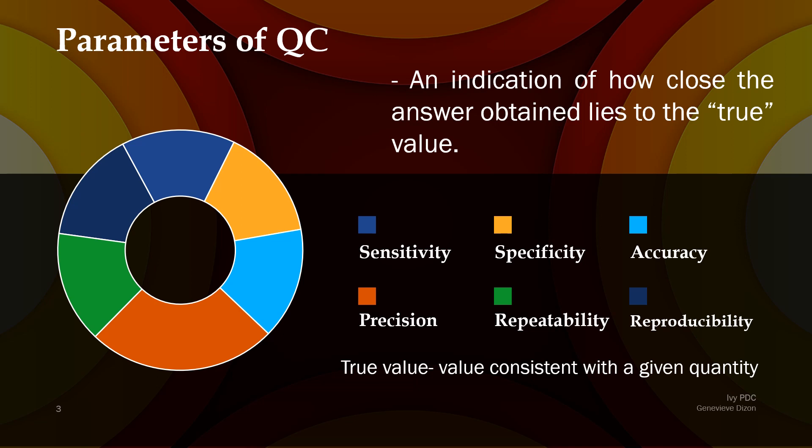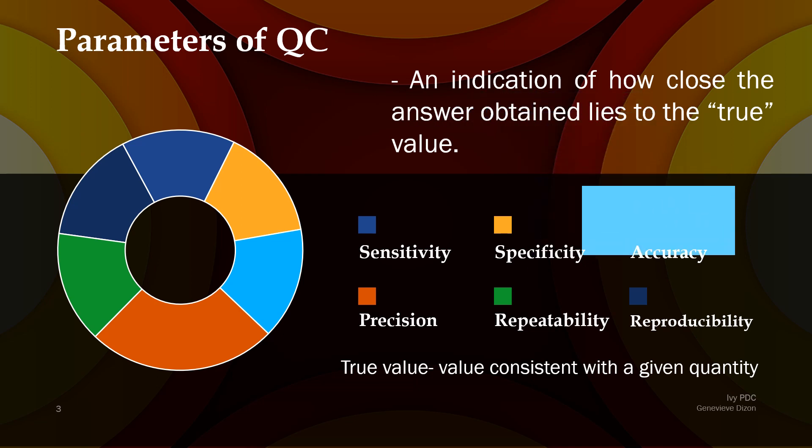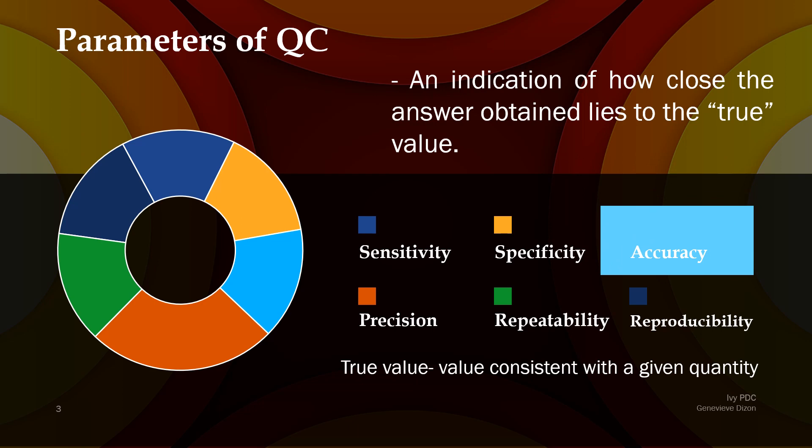Which one do you think refers to the closeness of the value to a true value? The answer is accuracy. Simply put, accuracy measures how close our tested value is to the true value — how far or how close it is. Did we get what we're supposed to measure? Did we give an accurate result? Accuracy may also be called, in other terms, validity.